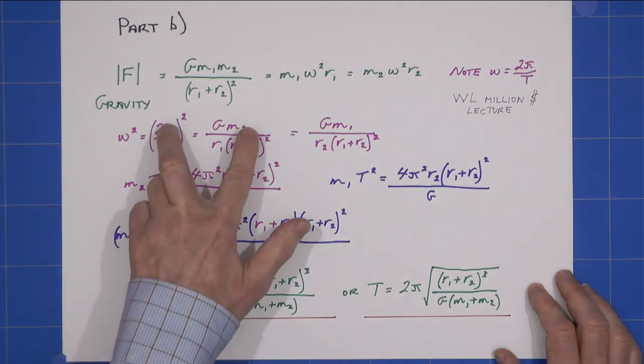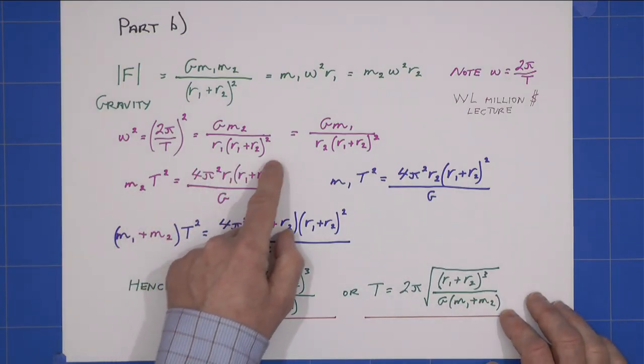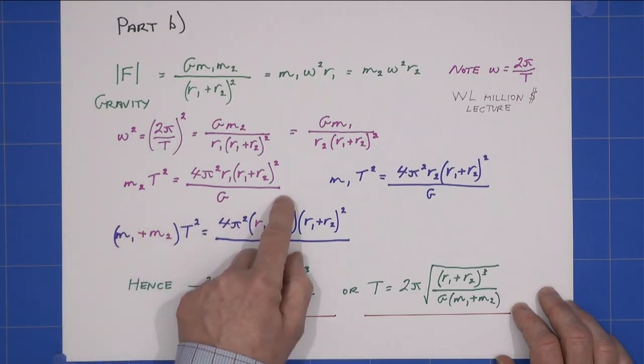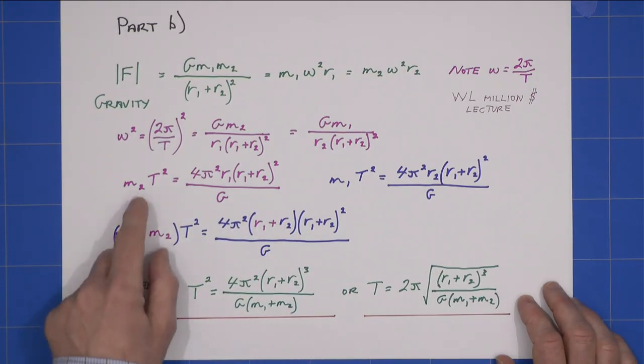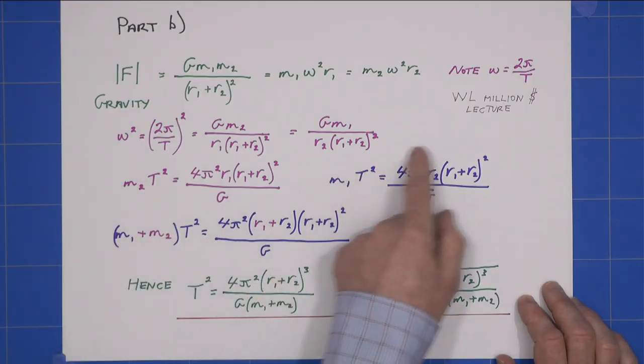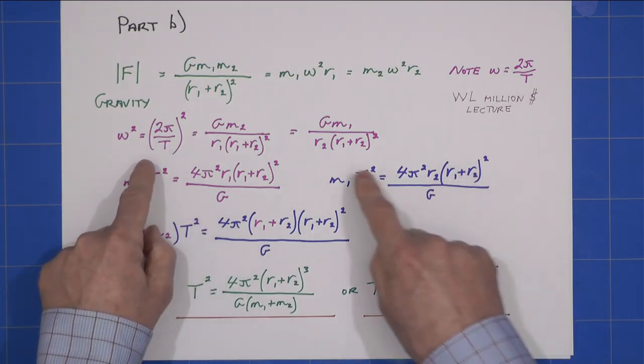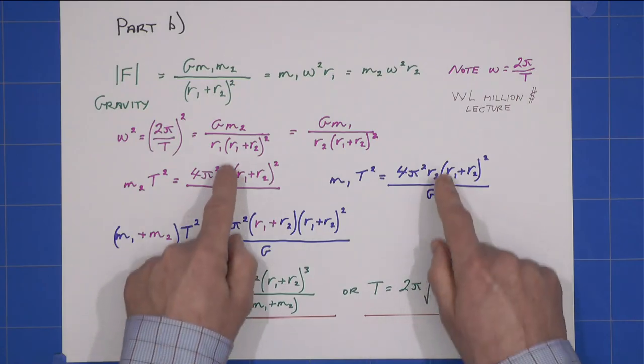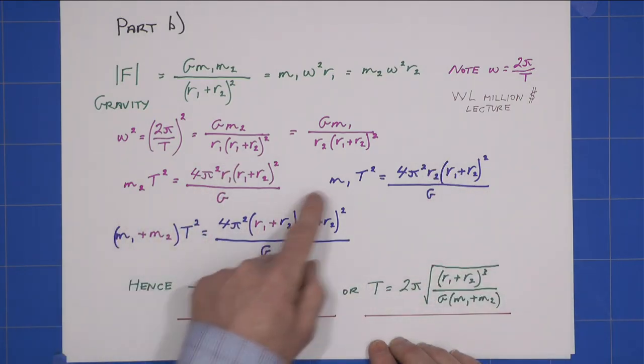And I can then take each of these and similarly rearrange again. There's a little bit of elimination that goes on, so I get this and I get that. I can then add those two together.